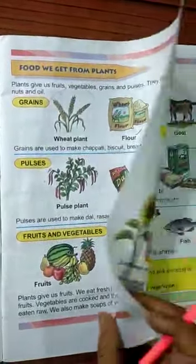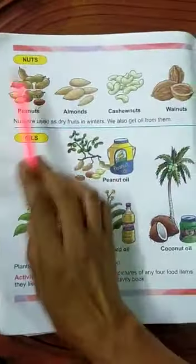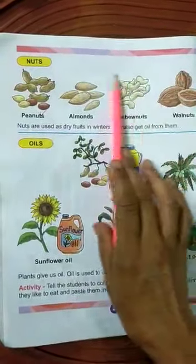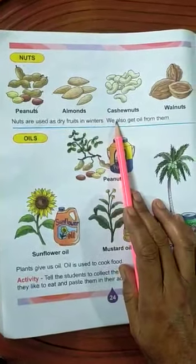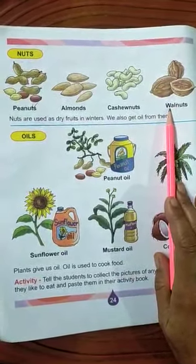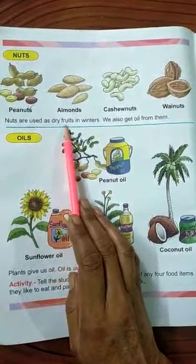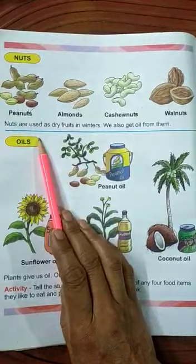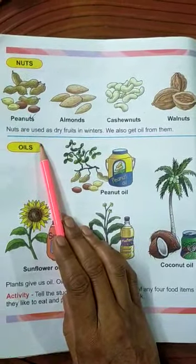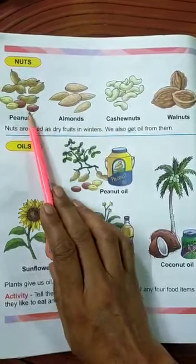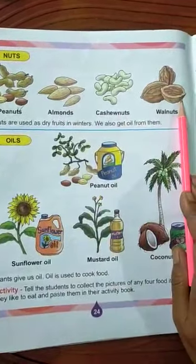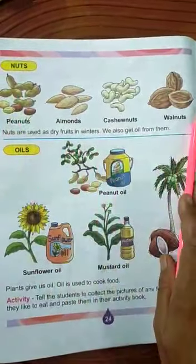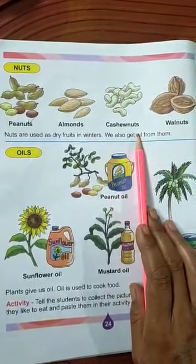हमें nuts भी plants से प्राप्त होते हैं — peanut, almonds, cashew nut, walnut। यहाँ इनके चित्र दिए गए हैं। Nuts are used as dry fruits in winter और इन्हें ज़्यादातर ठंड के मौसम में इस्तेमाल किया जाता है। We also get oil from them — इन सब चीज़ों से तेल भी प्राप्त होता है।